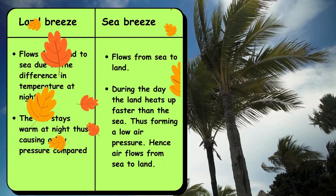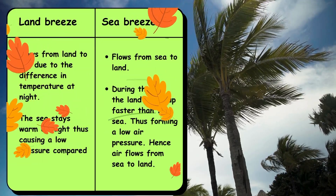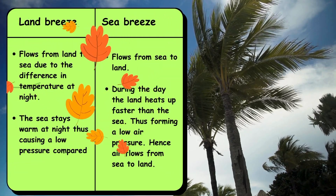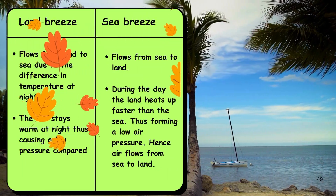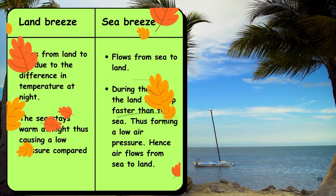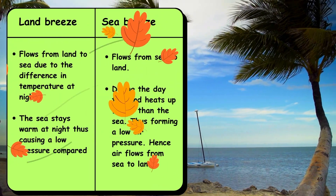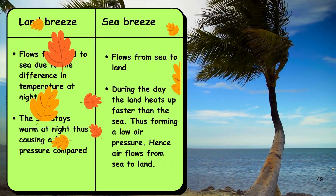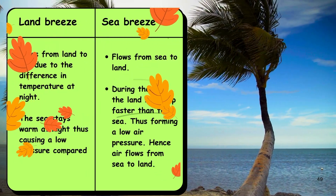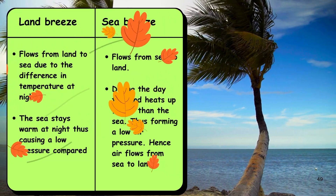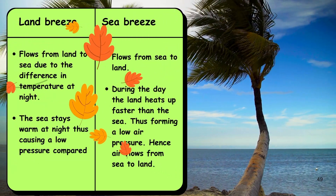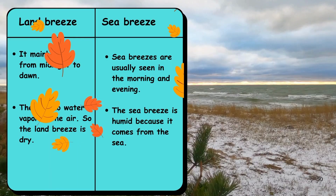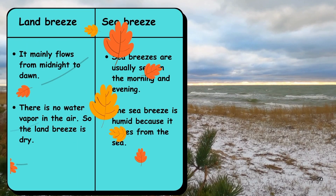Let us see some of the major differences between land breeze and sea breeze. Land breeze flows from land to sea due to the difference in temperature at night — the sea stays warm at night, causing low pressure compared to land. Sea breeze flows from sea to land because during the day the land heats up faster than the sea, forming lower air pressure, and hence air flows from sea to land.